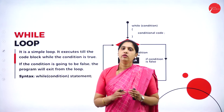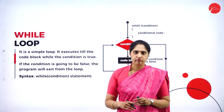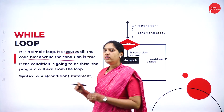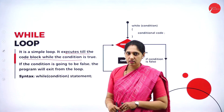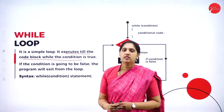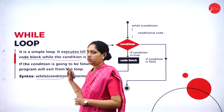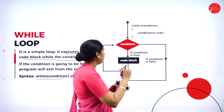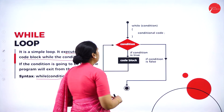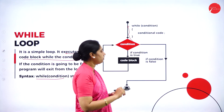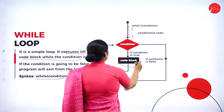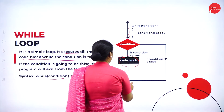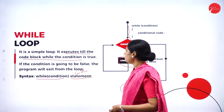Next is while loop. Both are loop statements but the syntax is different. The while loop also executes the code block until the condition is satisfied. The syntax is: while(condition), then we write the code. If the condition is true, the code block is executed. If the condition is false, it comes out of the loop.